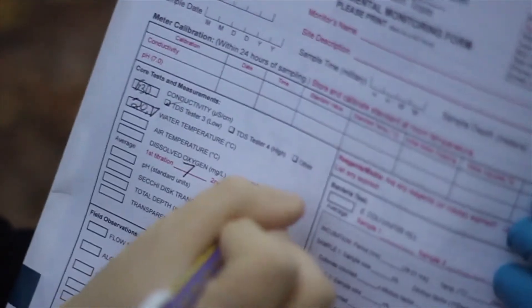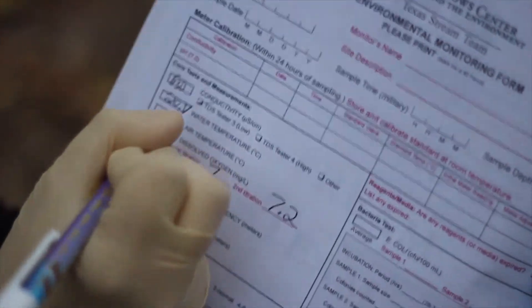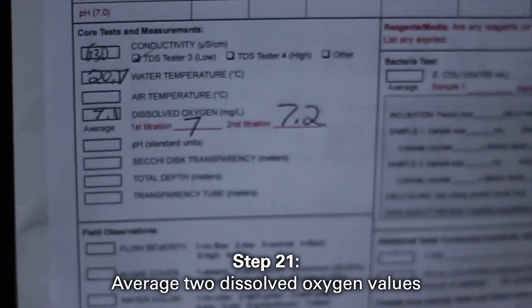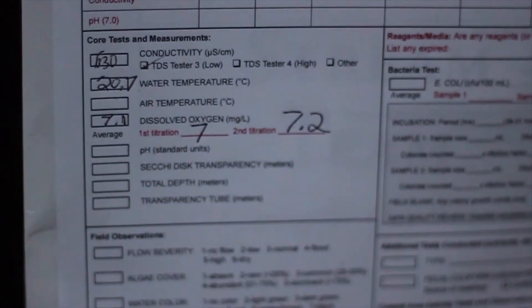If your first and second titration values differ by more than 0.5, you will need to start over as this indicates an error in the process. Average your two dissolved oxygen values for the final dissolved oxygen of the sample.